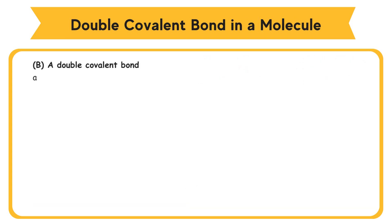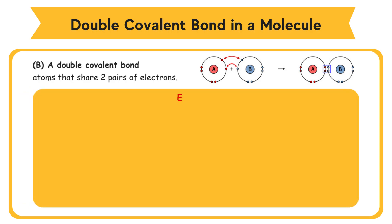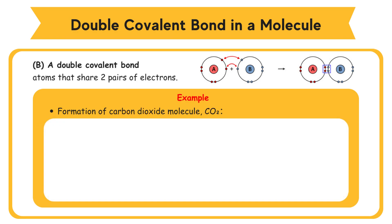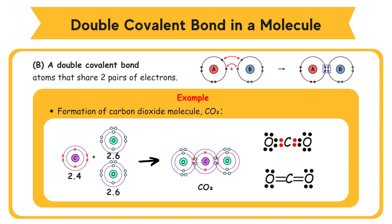Formation of Double Covalent Bond in a Molecule. A double covalent bond is a covalent bond formed by atoms that share two pairs of electrons. Example: formation of carbon dioxide molecule CO2. Lewis structure — electron arrangement of carbon atom is 2.4. Carbon atom needs four electrons to achieve a stable octet electron arrangement. Electron arrangement of oxygen atom is 2.6. Oxygen atom needs two electrons to achieve a stable octet electron arrangement. One carbon atom C contributes four electrons for sharing, and two oxygen atoms O each contribute two electrons for sharing.